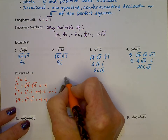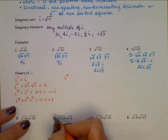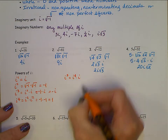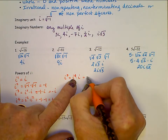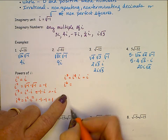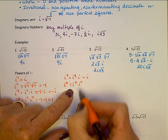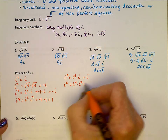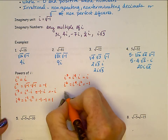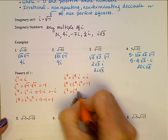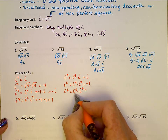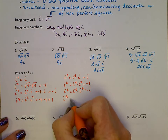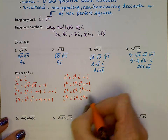i to the fifth is i to the fourth times i — but i to the fourth is 1 — so we have just i. i to the sixth is i to the fourth times i squared: 1 times negative 1 is negative 1. i to the seventh is i to the fourth times i cubed: 1 times negative i is negative i. i to the eighth is i to the fourth times i to the fourth: 1 times 1 is 1. Notice the pattern: i, negative 1, negative i, and 1.